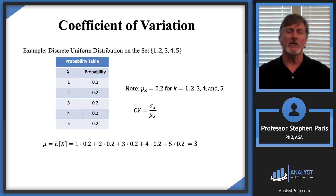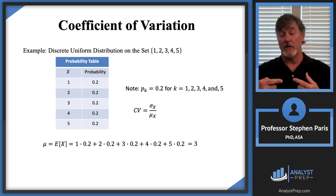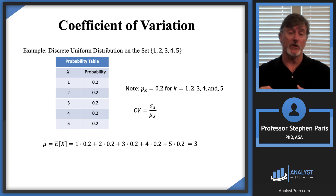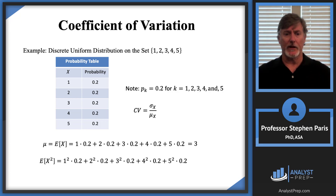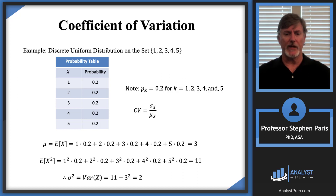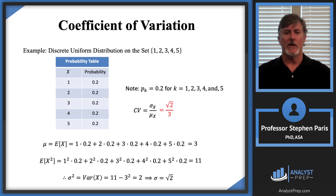I'm going to calculate the variance as the second moment minus the square of the first moment. The first moment is 3. For the second moment, I square the values of X and take the sum product, which gives 11. Subtracting the square of the mean from 11, I get 2. So the variance is 2, which makes the standard deviation the square root of 2. The coefficient of variation is therefore the square root of 2 over 3.